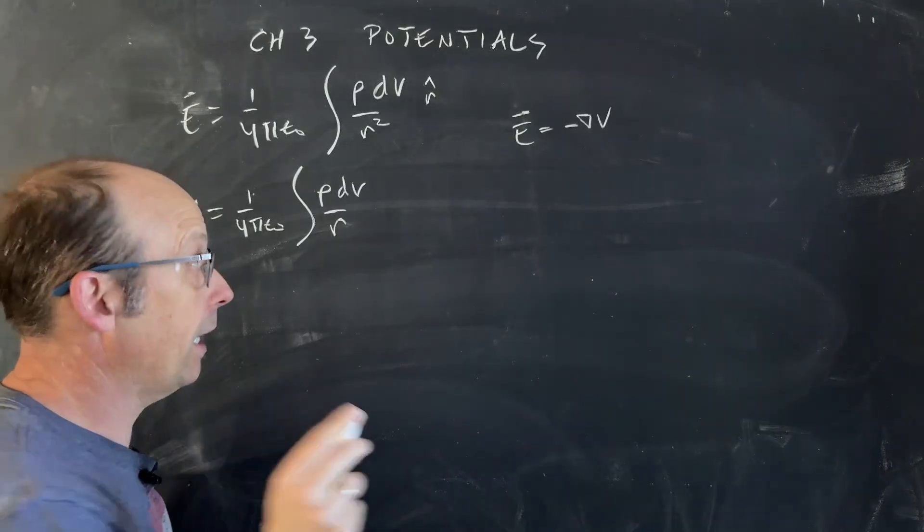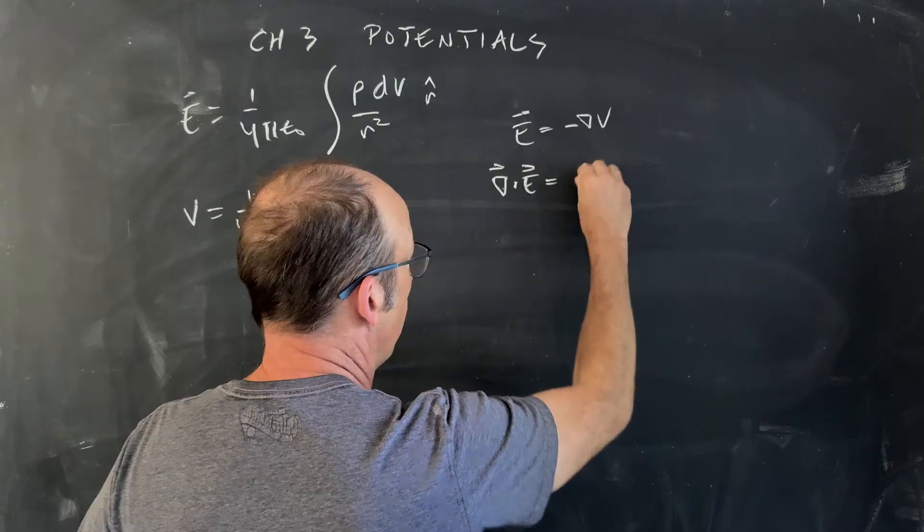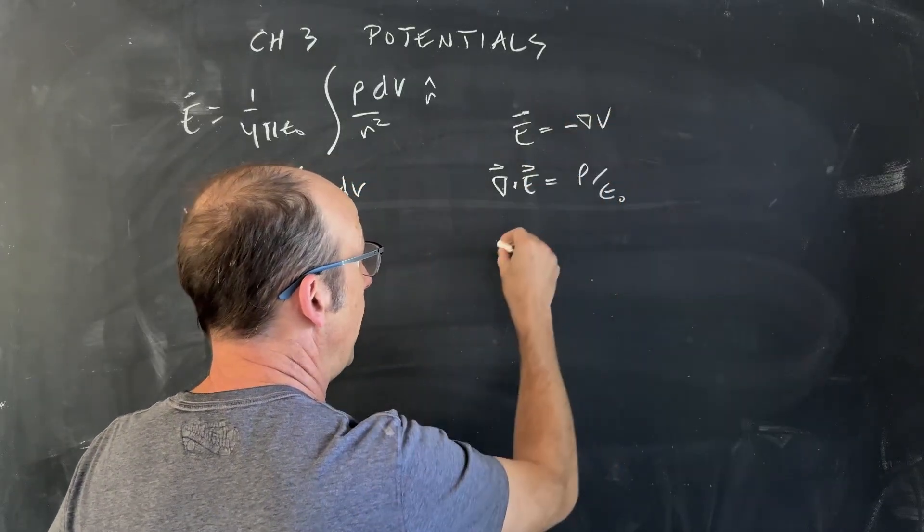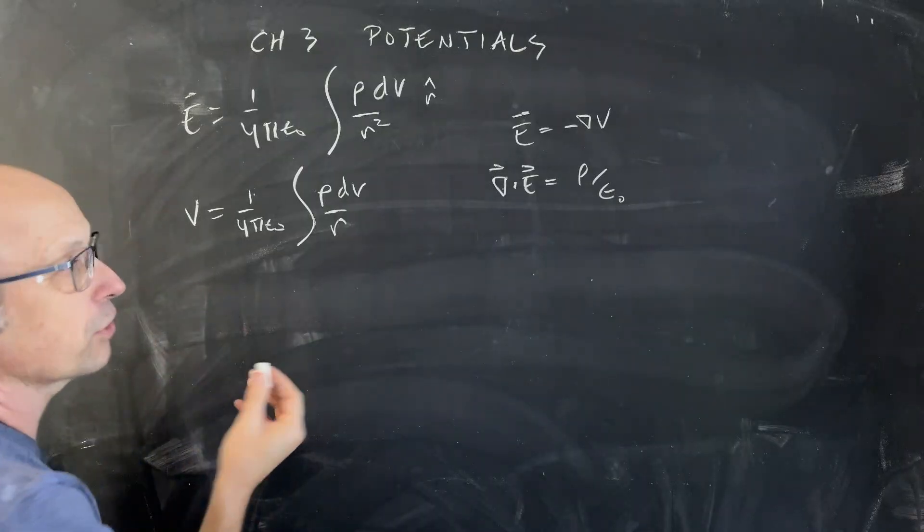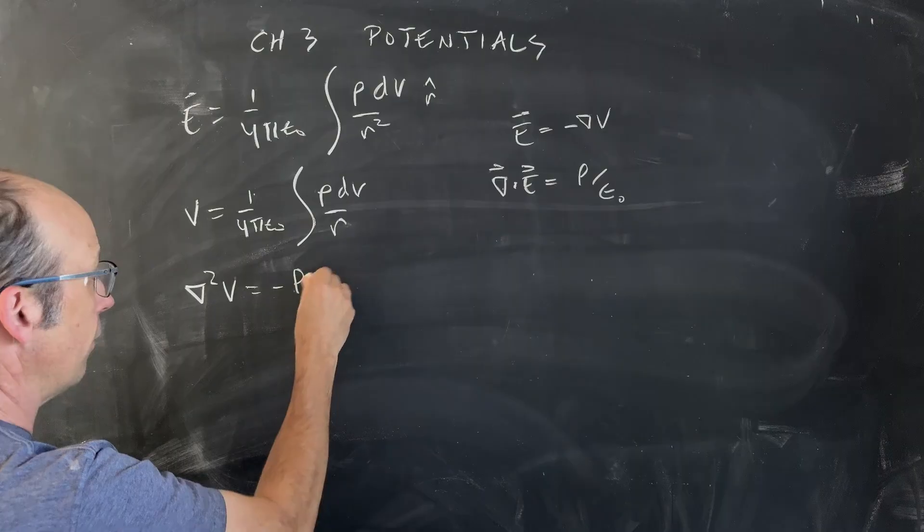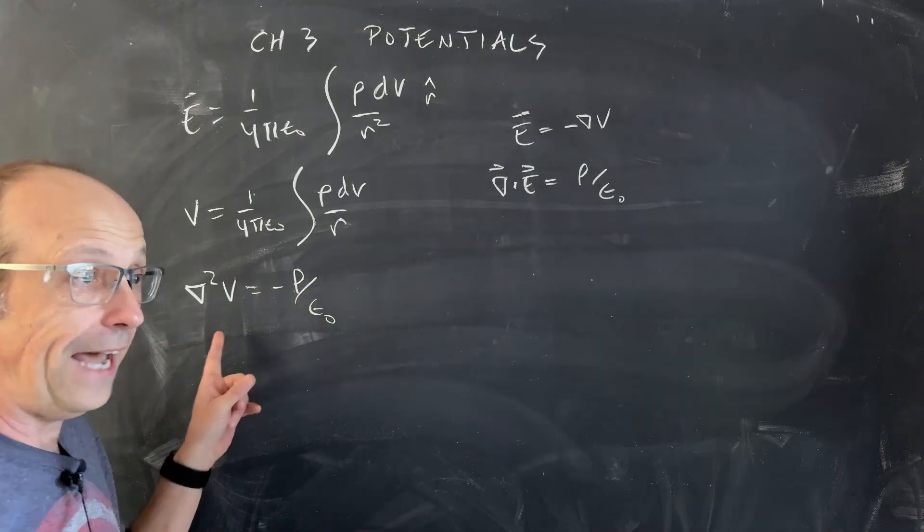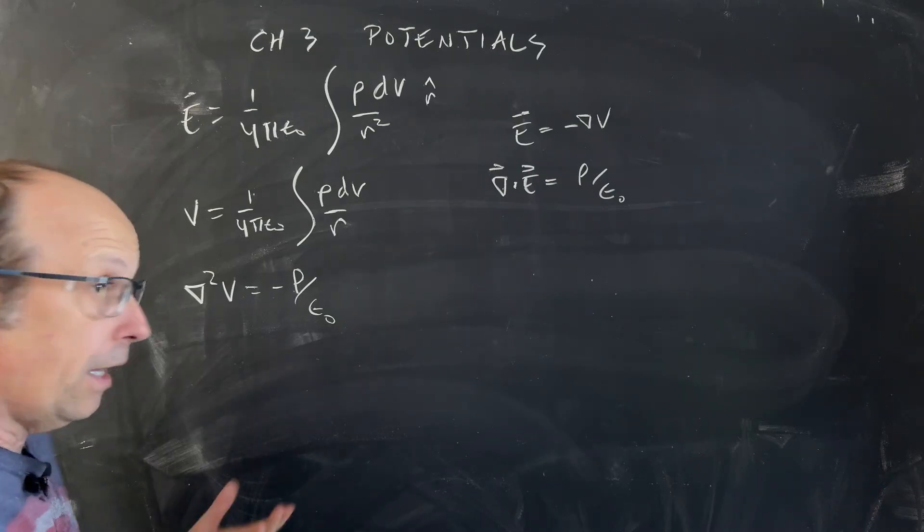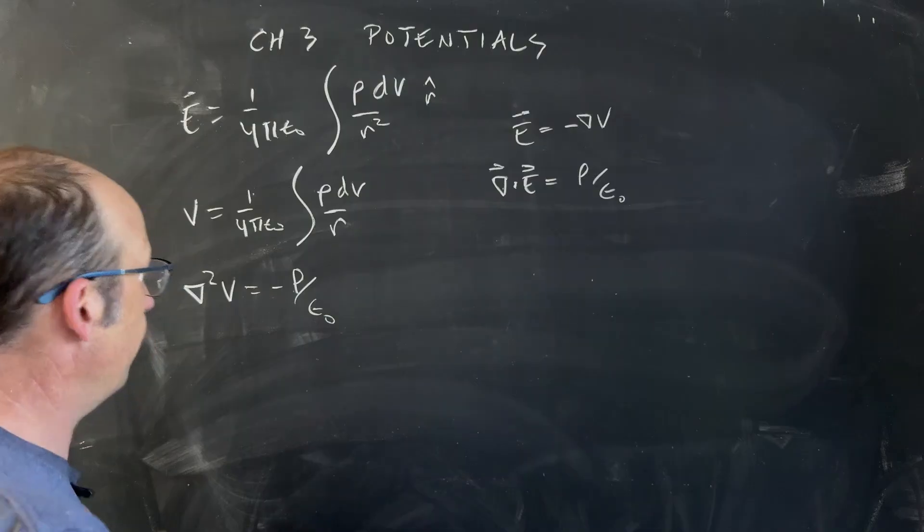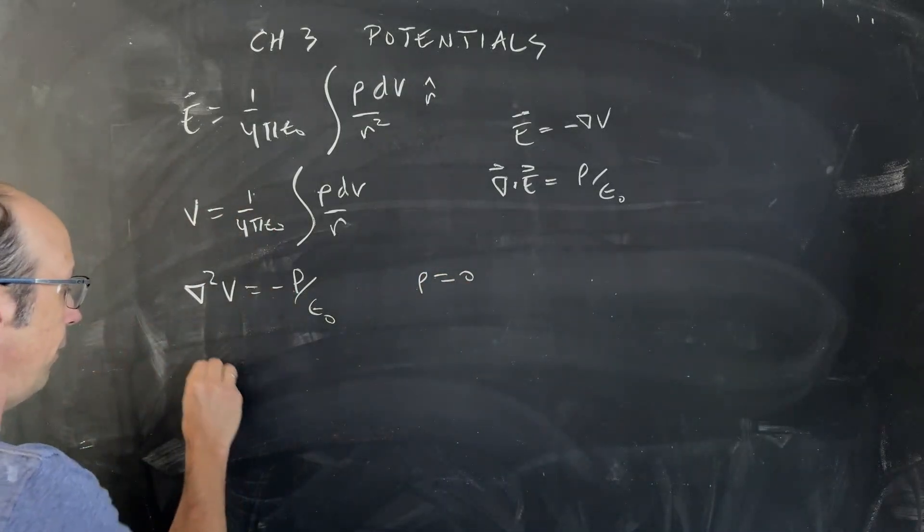And don't forget, Gauss's law says that the divergence of E is rho over epsilon naught. So if I put this in for that, I actually get the Laplace equation or the Poisson equation, which is the second partial of the potential is negative the charge density divided by epsilon naught. How do you solve that equation? That's the first part of this thing. How do you solve that equation? And in particular, how do you solve this equation when rho is zero, no charges? So now we have this.